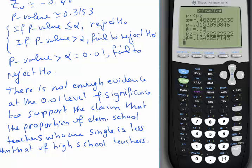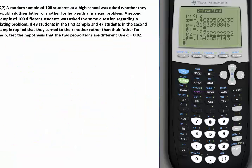We're going to do a second exercise using the TI-84 as well. A random sample of 100 students at the high school was asked whether they would ask their father or mother for help with a financial problem. A second sample of 100 different students was asked the same question regarding a dating problem. If 43 students in the first sample and 47 students in the second sample replied that they turned to their mother rather than their father for help, test the hypothesis that the two proportions are different.